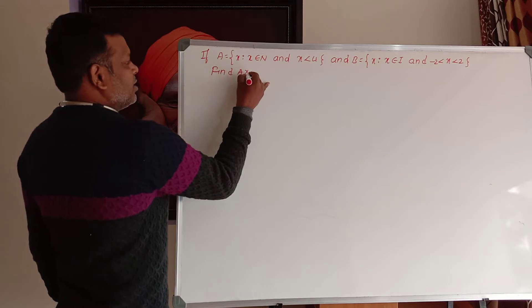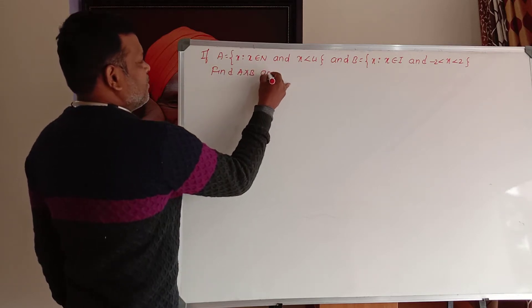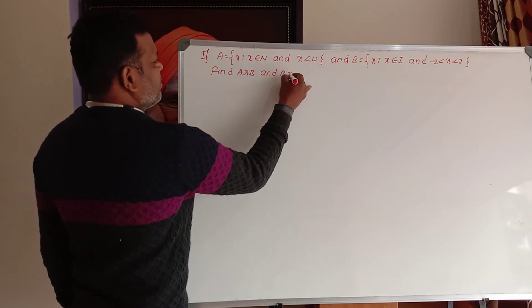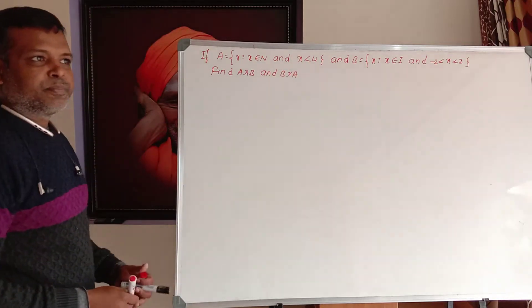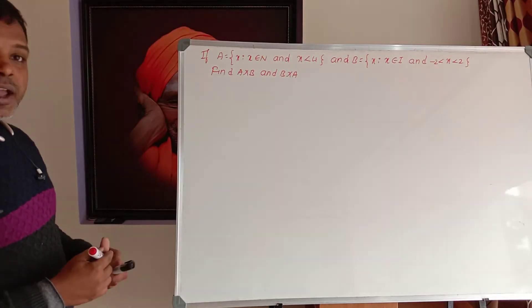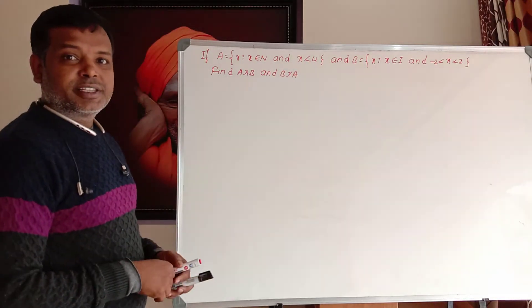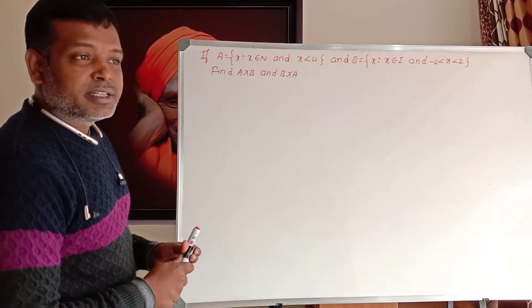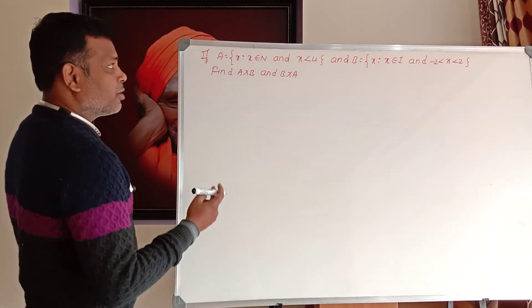Find A cross B and B cross A. This is very simple. The tabular method — which is the same as the roster method — is easy. The rule method converts to the tabular method.